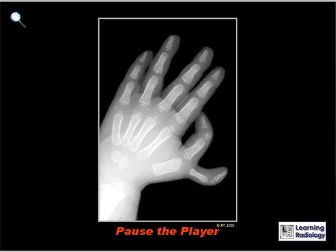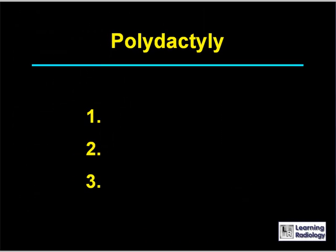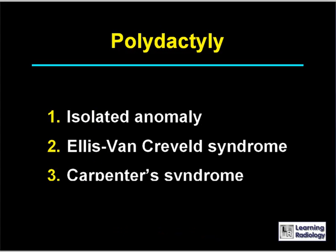Here's the next differential diagnosis. The differential diagnosis is for polydactyly. There are three major causes. The three major causes of polydactyly include an isolated anomaly, Ellis-van Creveld syndrome, and Carpenter syndrome.